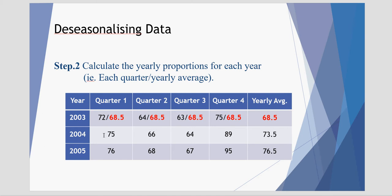We take the original sales data of 72,000 and divide it by the average of the entire year. Quarter 2, we take its value of 64,000 and divide it by the average of the entire year, which is 68.5, and so forth for quarter 3 and quarter 4, always comparing it and dividing against the yearly average for that particular year of 2003.